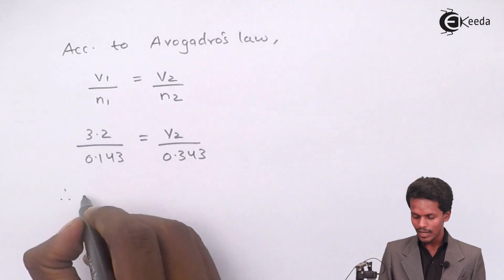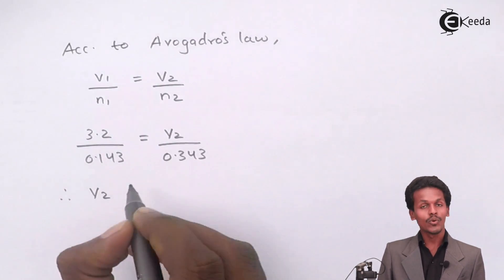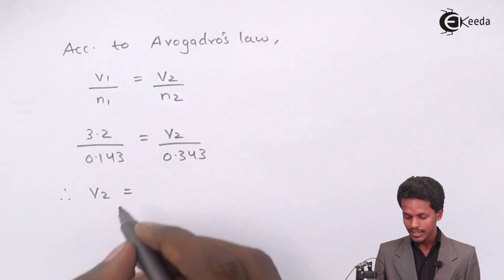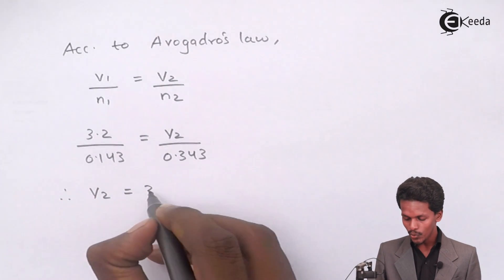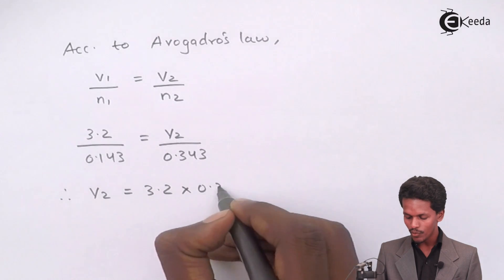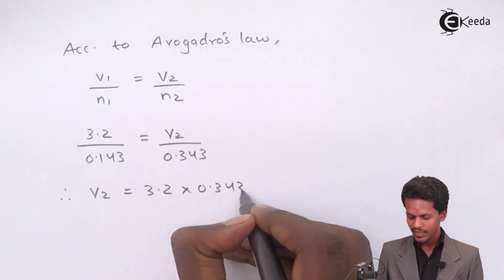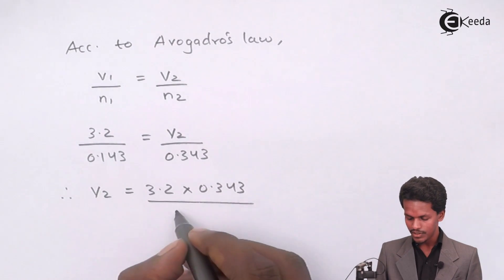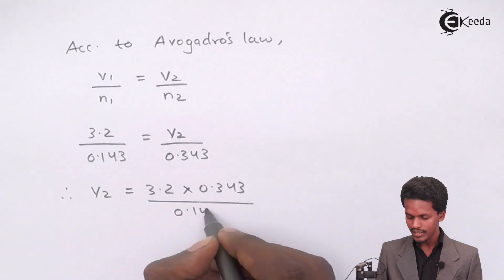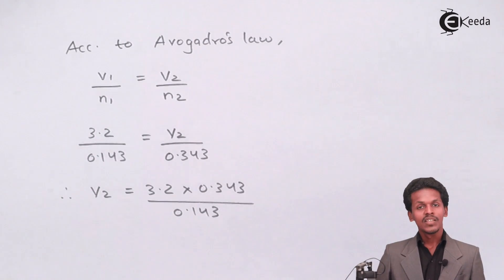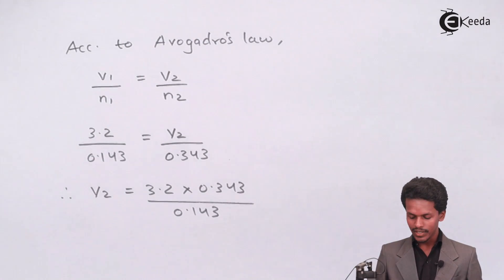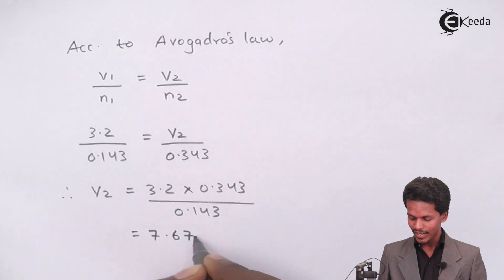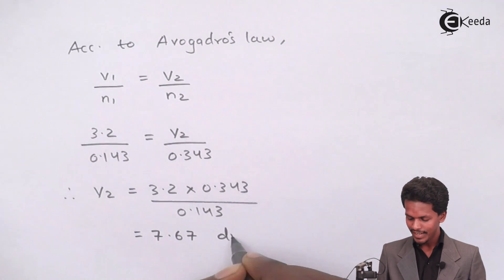Cross-multiplying, we get: V2 = 3.2 × 0.343 / 0.143. The answer we get is 7.67 dm³.